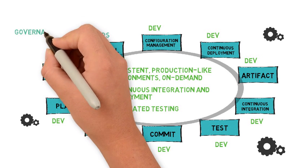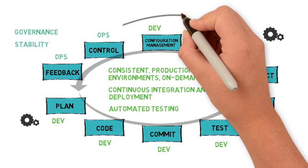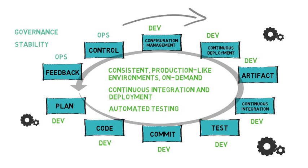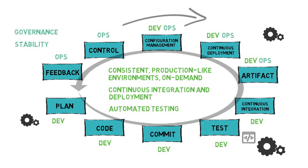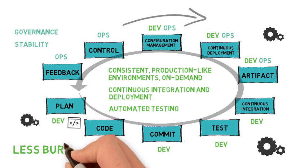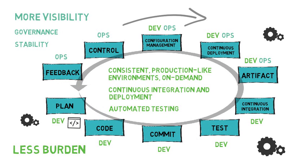The infrastructure and operations teams that are concerned with governance and stability can participate in this shift by working in a high-trust culture where dev and ops collaborate to build the optimal execution flow. Treating infrastructure like code benefits both dev and operations, enabling you to version infrastructure definitions with code and use consistent, production-like environments everywhere. A shift left takes the burden of toolchain management off the development teams and provides the infrastructure and operations team the visibility, governance, and control to support the business.